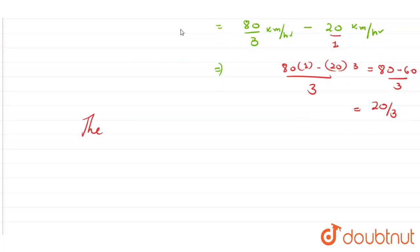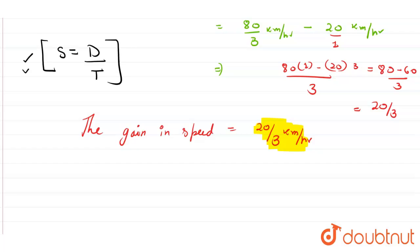So the gain in speed is 20/3 kilometers per hour, which is our final answer: 20/3 kilometers per hour. The main formula used in this question was speed equals distance upon time.